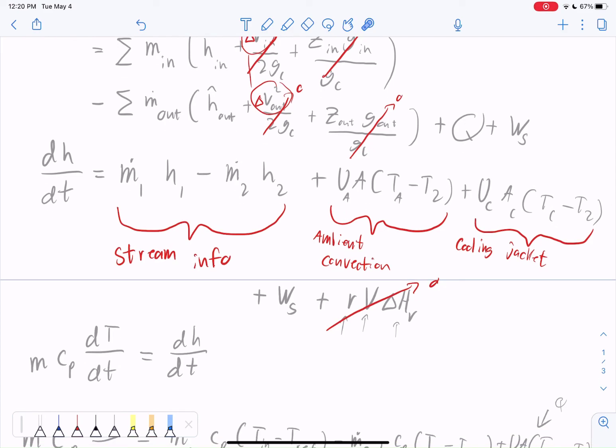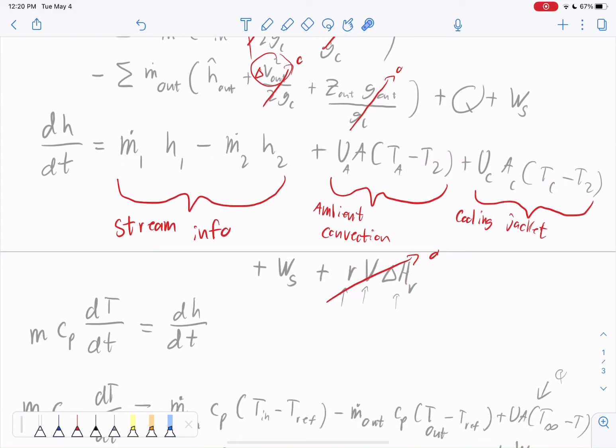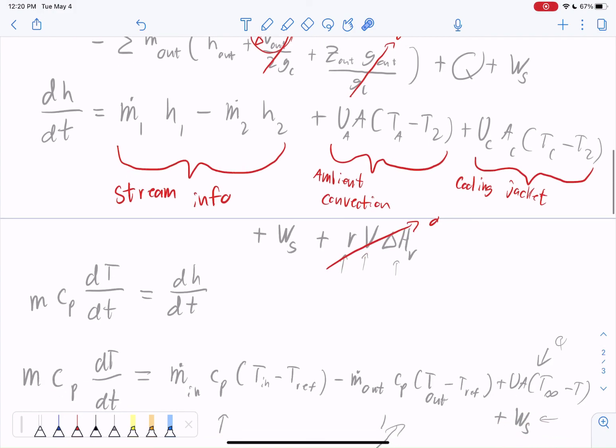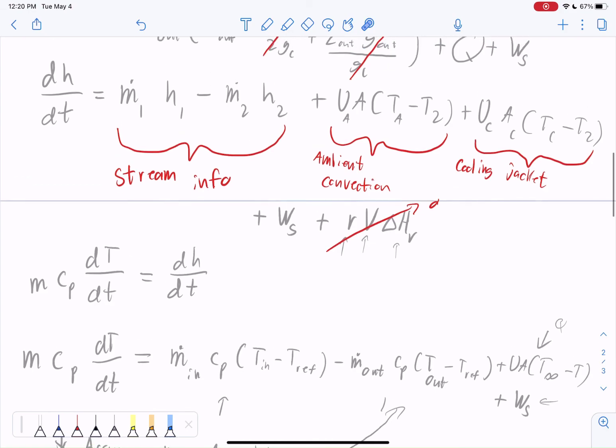Then we said, okay, well, there's some streams that are going to be changing. There's some ambient convection, some ambient cooling, some shaft work, and some reaction energy that happens. And we'll assume that the ambient convection and cooling jacket are going to zero, as well as the energy from the reaction, since there is no reaction.